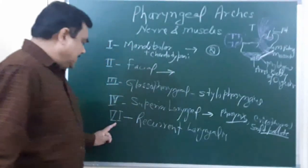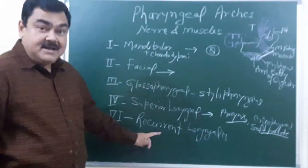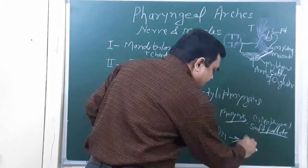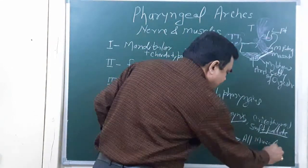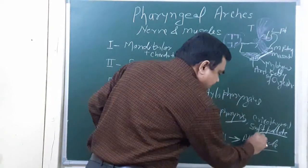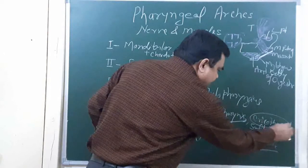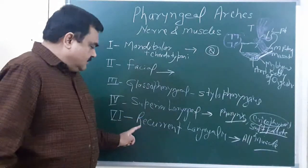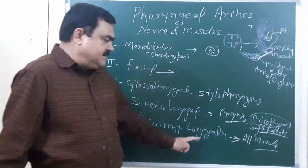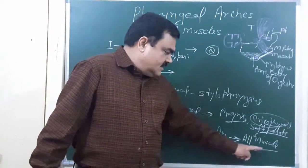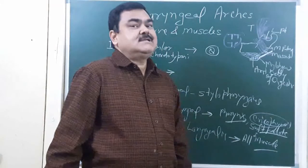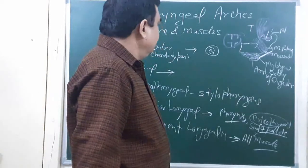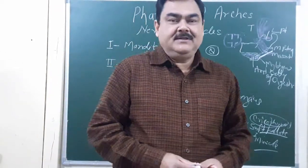The sixth arch nerve is the recurrent laryngeal nerve. It gives supply to all the intrinsic muscles of the larynx, except the cricothyroid, which is supplied by the superior laryngeal nerve. So this covers all the nerves and muscles derived from the pharyngeal arches.